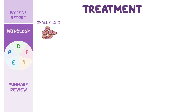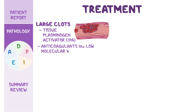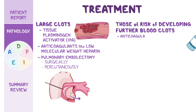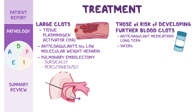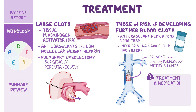Small clots may resolve on their own. However, large clots usually need treatment with fibrinolytic medications, like tissue plasminogen activator, or TPA, to help break down the clot, and anticoagulants, like low molecular weight heparin, to decrease blood coagulation. A pulmonary embolectomy can also be done, either surgically or percutaneously, to remove the clot. For those at risk of developing further blood clots, anticoagulant medications may be given long-term, or an inferior vena cava filter, or IVC filter, can be surgically placed into the inferior vena cava to prevent blood clots from entering the pulmonary artery and lungs. Keep in mind that the treatment course and medications may be influenced by factors such as whether the patient is pregnant or breastfeeding.